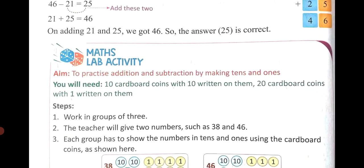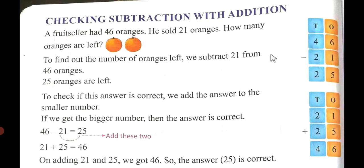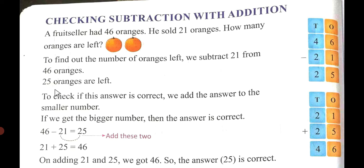That is checking subtraction with addition. A fruit seller had 46 oranges. He sold 21 oranges. How many oranges are left? Always remember: the greater number comes first. Write 46 above and 21 below. 6 minus 1 is 5 and 4 minus 2 is 2. To find the number of oranges left we subtract 21 from 46. So 25 oranges are left.